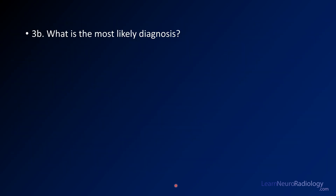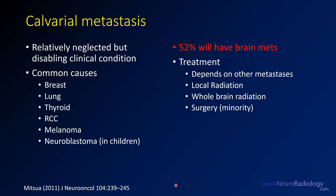The most likely diagnosis is calvarial metastatic disease. It's something that we don't think about a whole lot but is relatively common. You can see this with some of the more common malignancies including breast cancer, lung cancer, and RCC. Of course melanoma is known for going anywhere. In children you might think about neuroblastoma. If you see a calvarial metastasis, think about intracranial metastases or brain metastases, which are going to be present more than 50% of the time.